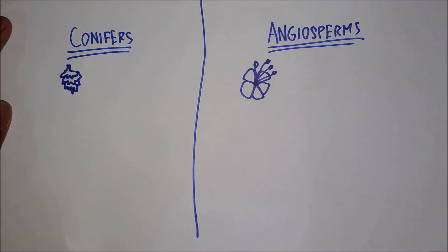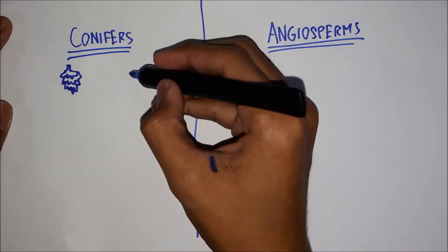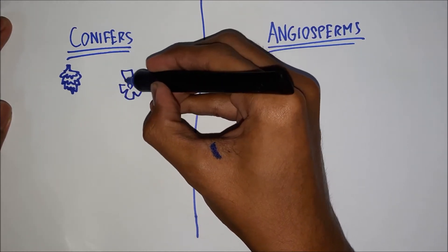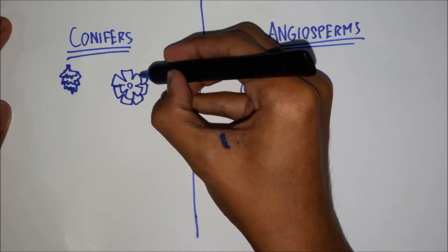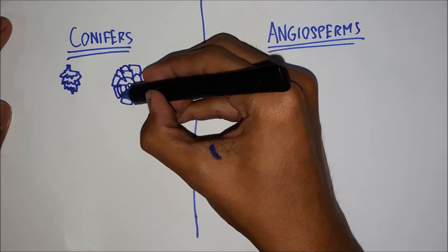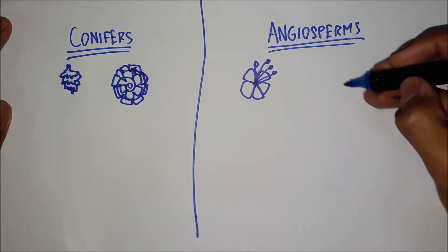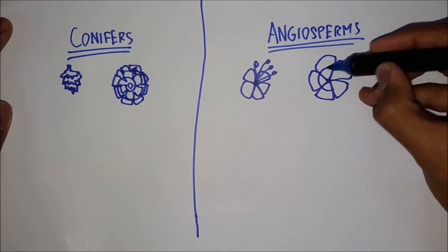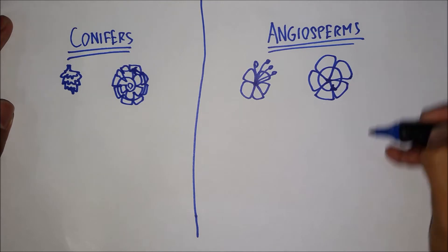Now, secondly, the cone parts in pine cones of conifers, if you look at them from top view, you'll notice that they're arranged in a spiral kind of arrangement. While in flowering plants, they're just arranged in a wall, circular ring like that.